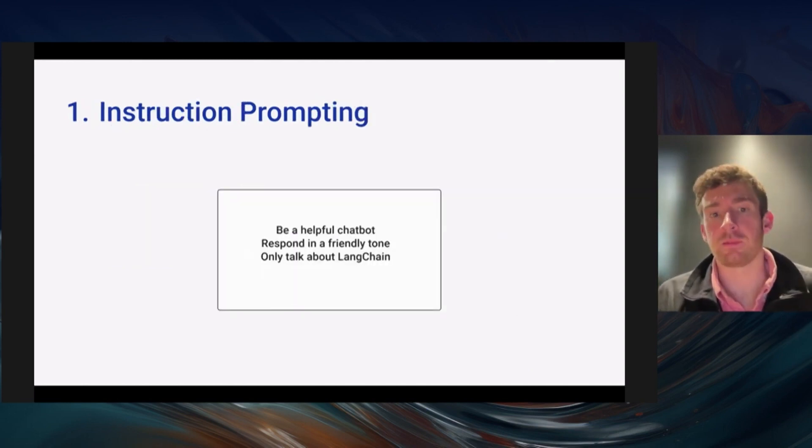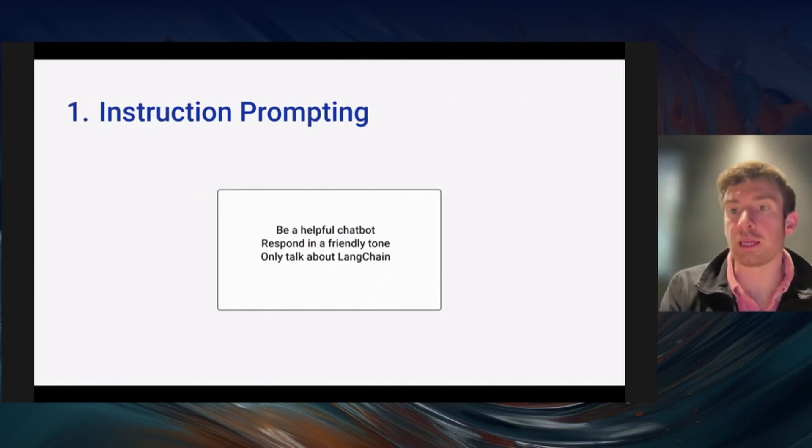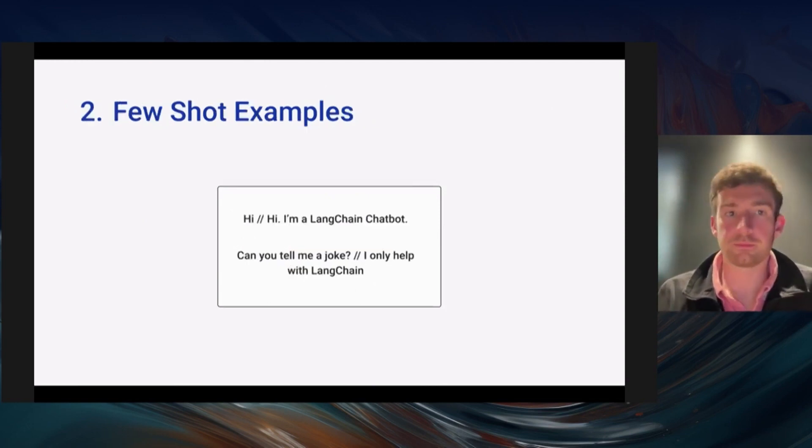First up, you've got instruction prompting. This is when you tell the language model what to do and you're bringing it the context of whatever you tell it to do. This is similar to if you show up to work on the first day and you get an employee handbook that's telling you how the workplace expects you to behave. Here you're bringing the context of your application and telling the language model how you expect it to behave in this particular context.